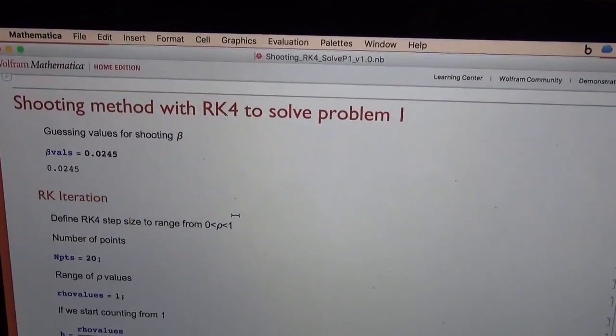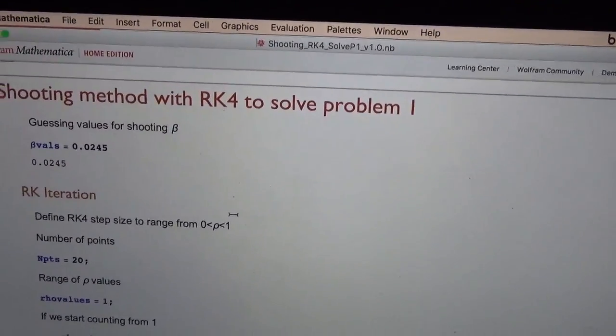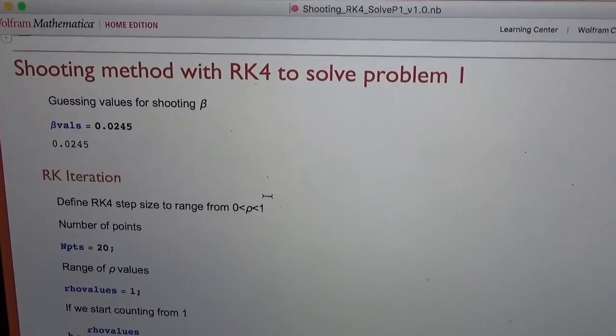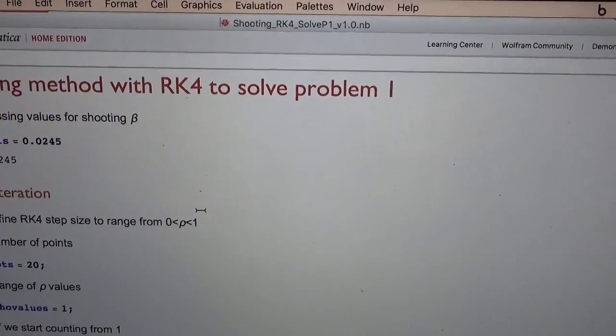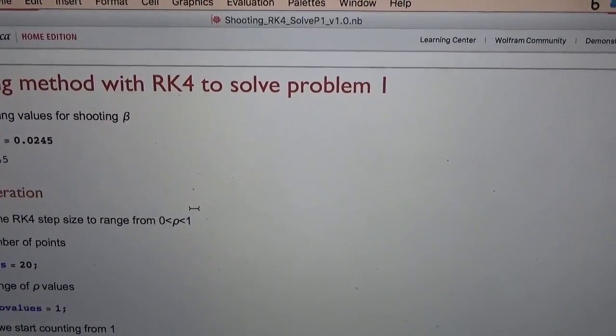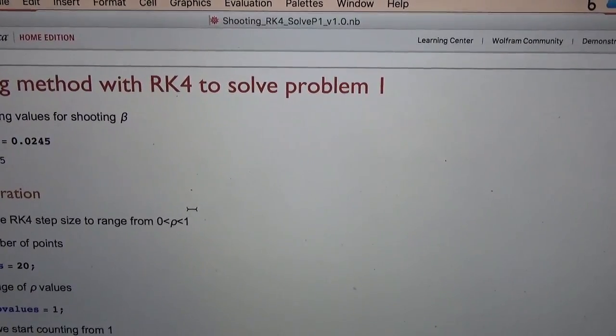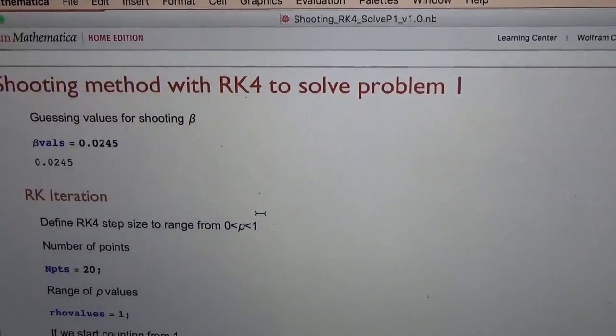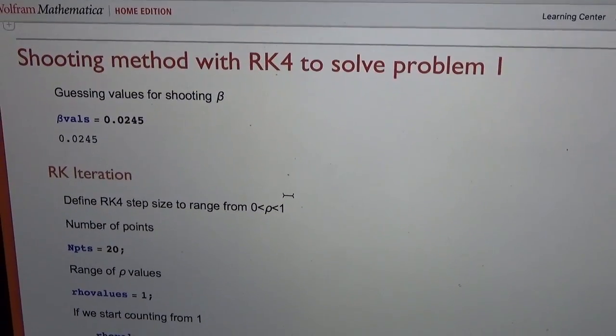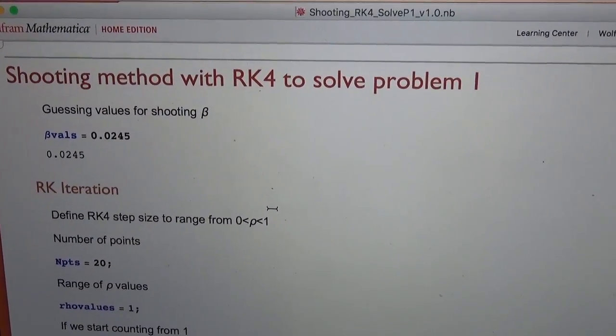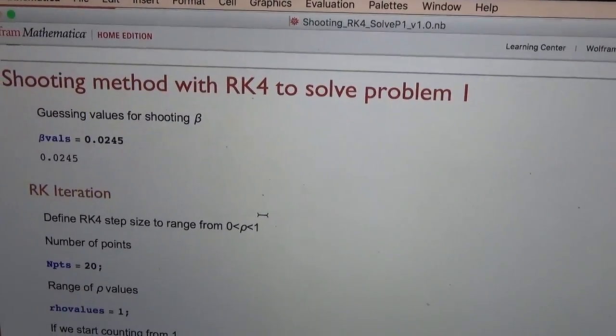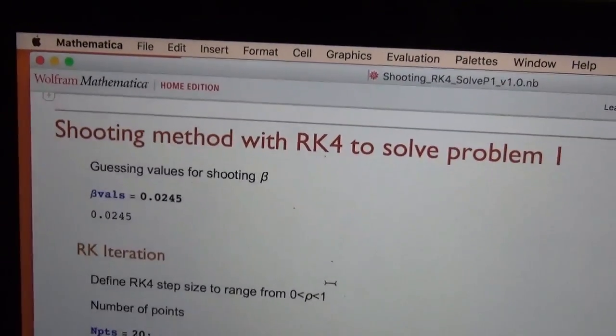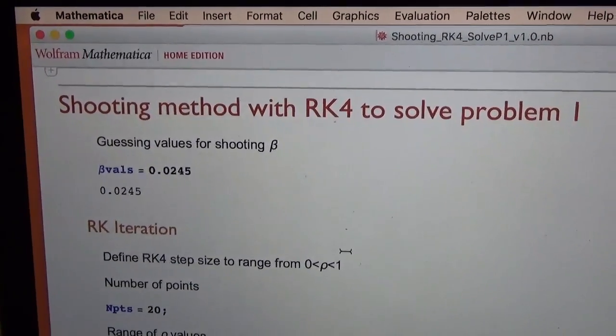This video shows a Mathematica notebook that can be used to solve problem one with the nonlinear, non-homogeneous consumption term using Runge-Kutta fourth order and a shooting parameter. In the previous video I uploaded the derivation and here I'm showing how to solve it.